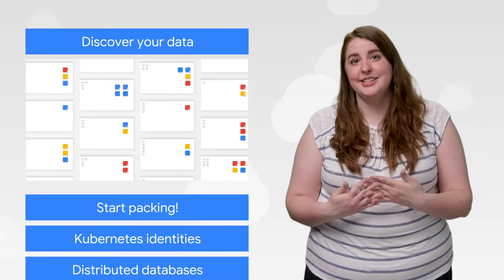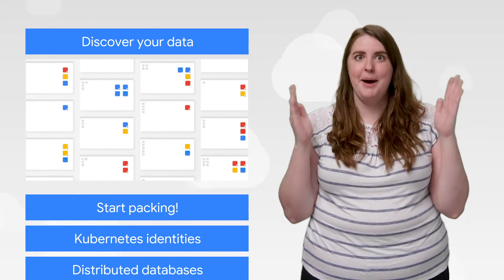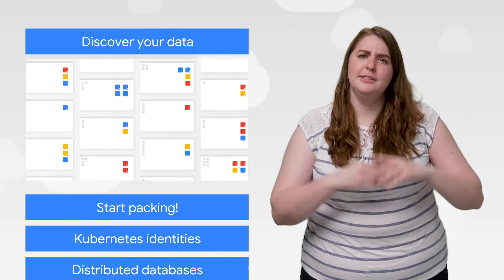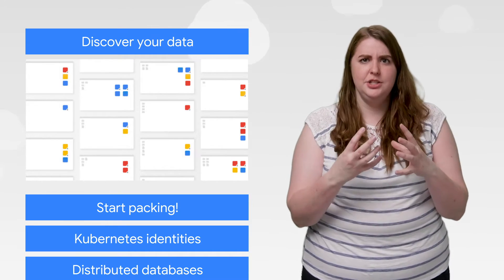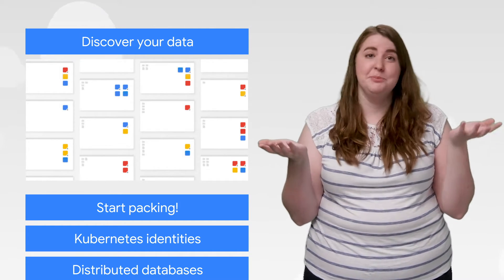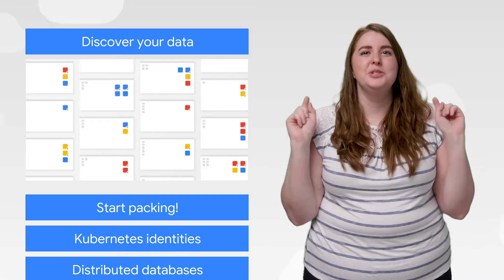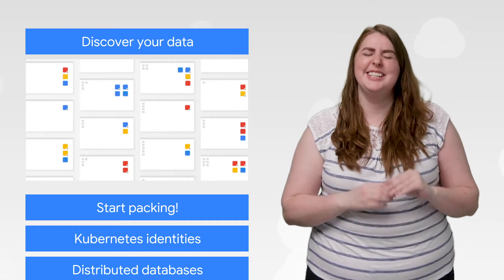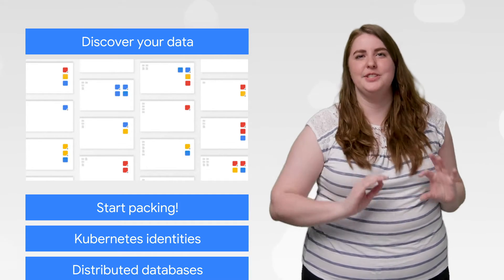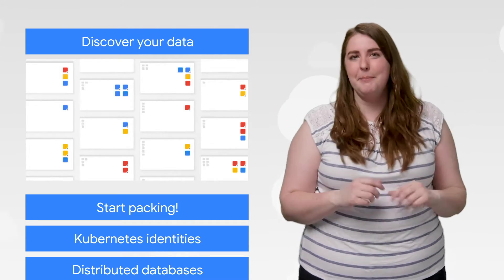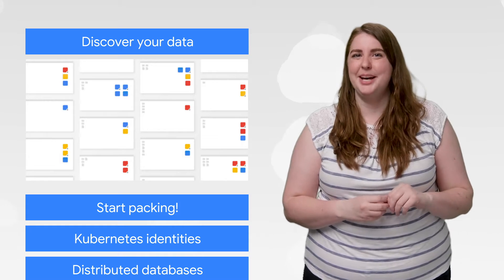Cloud Data Catalog is now available in public beta. Data Catalog is a fully managed data discovery and metadata management service, which means you can use Data Catalog to easily search for tables in Google BigQuery or topics in Cloud PubSub.